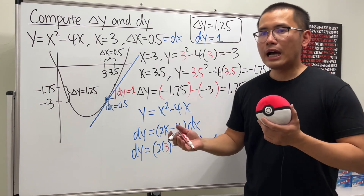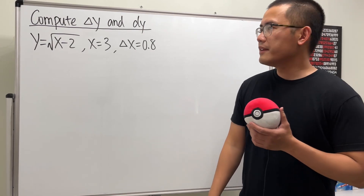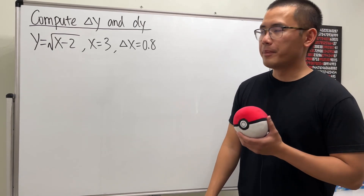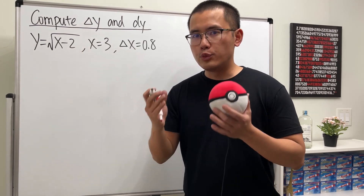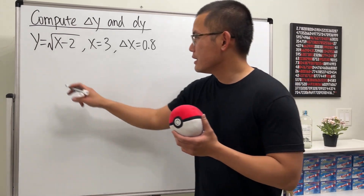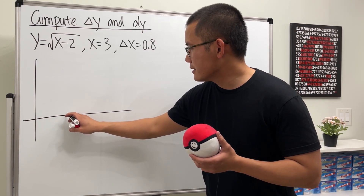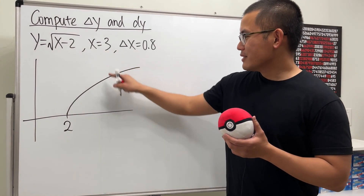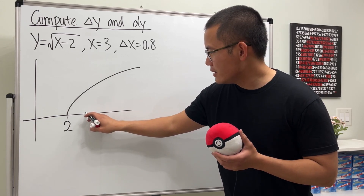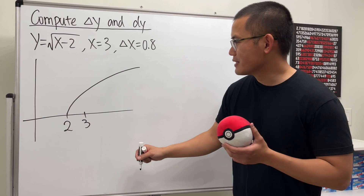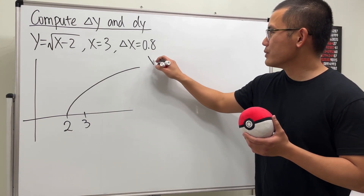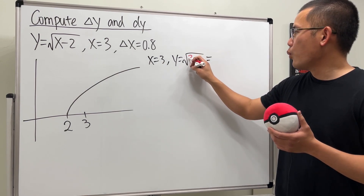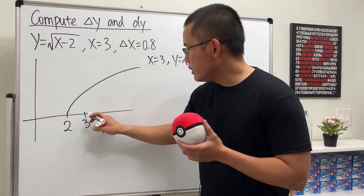That's the difference between Δy and dy. Now let's do another example. Here y = √(x - 2), x = 3, and Δx = 0.8. The graph of √(x - 2) is a regular square root graph shifted right by 2. When x = 3, y = √(3 - 2) = √1 = 1. So our starting point is at x = 3, y = 1.